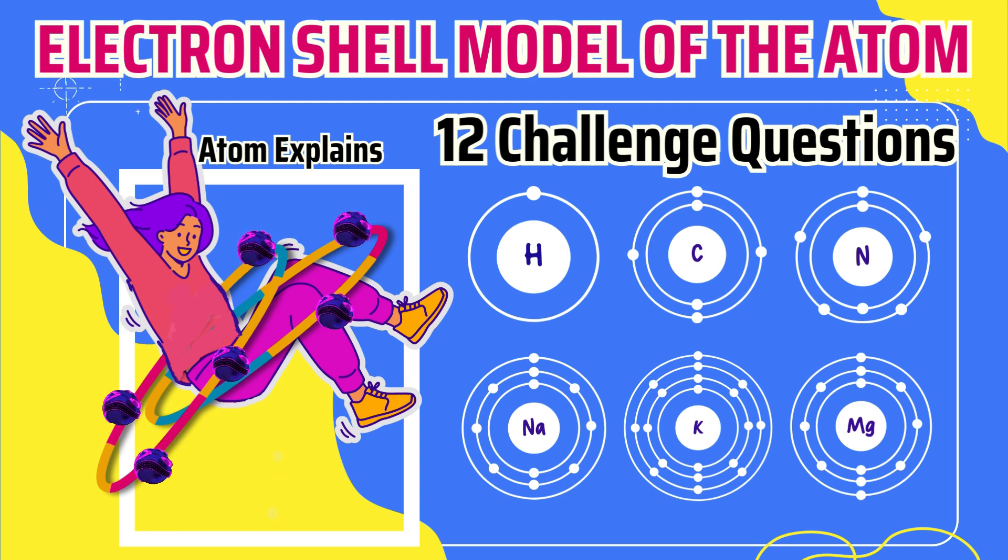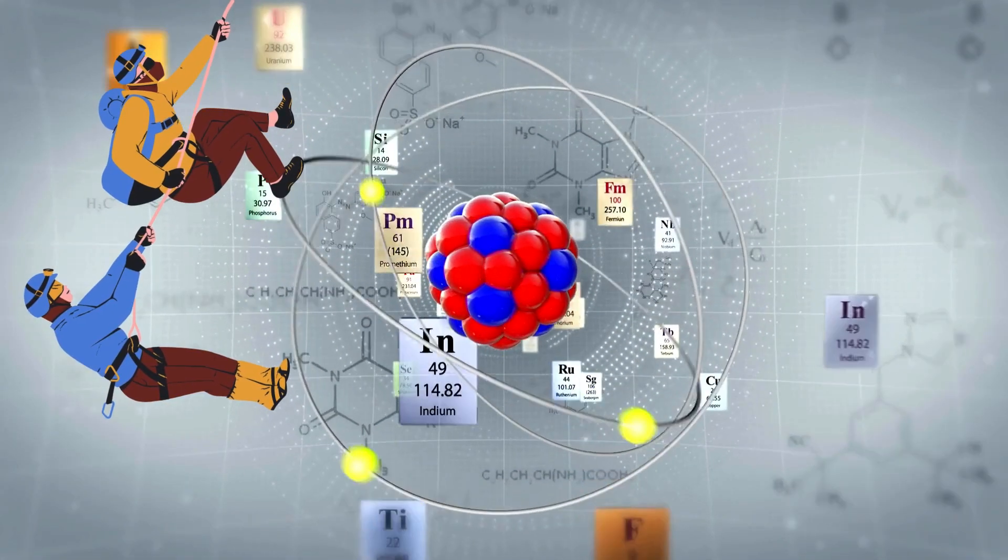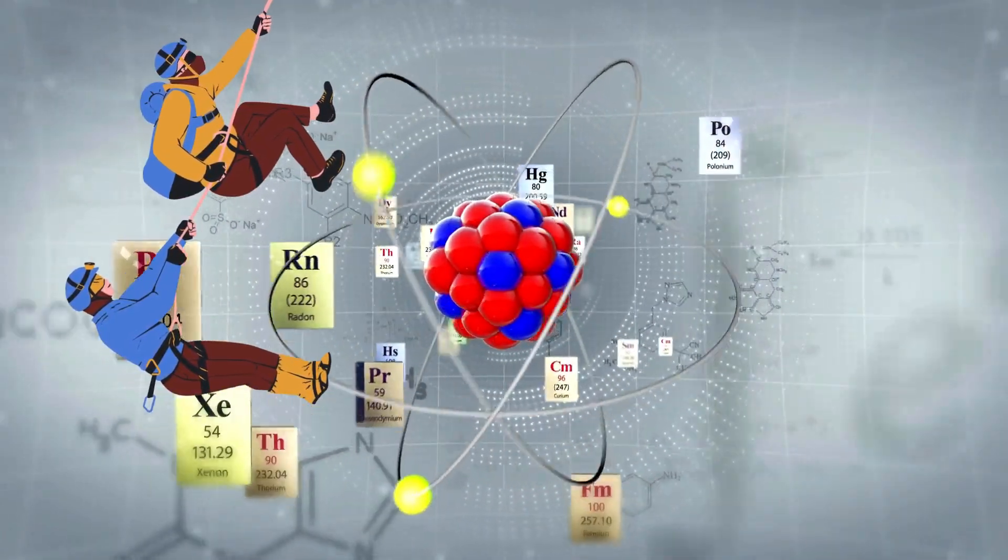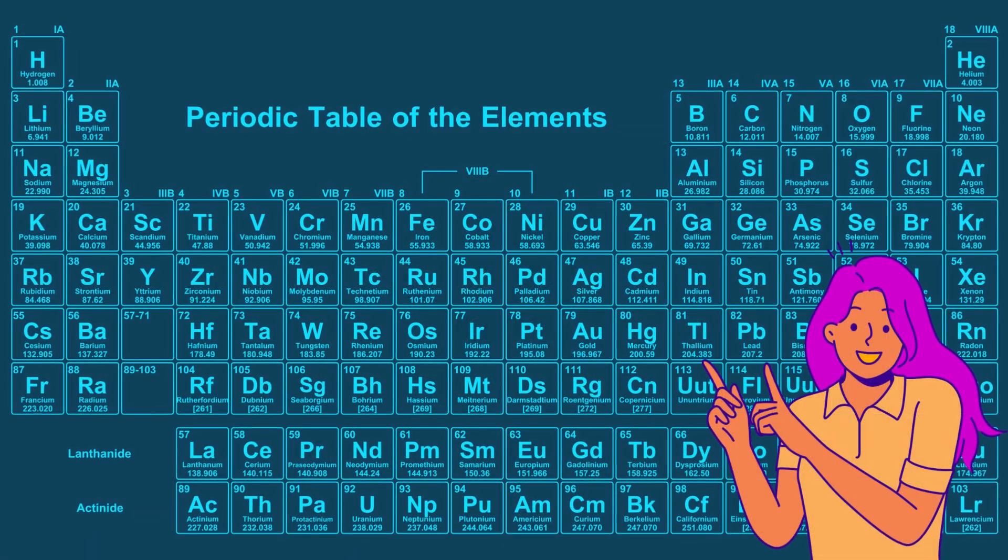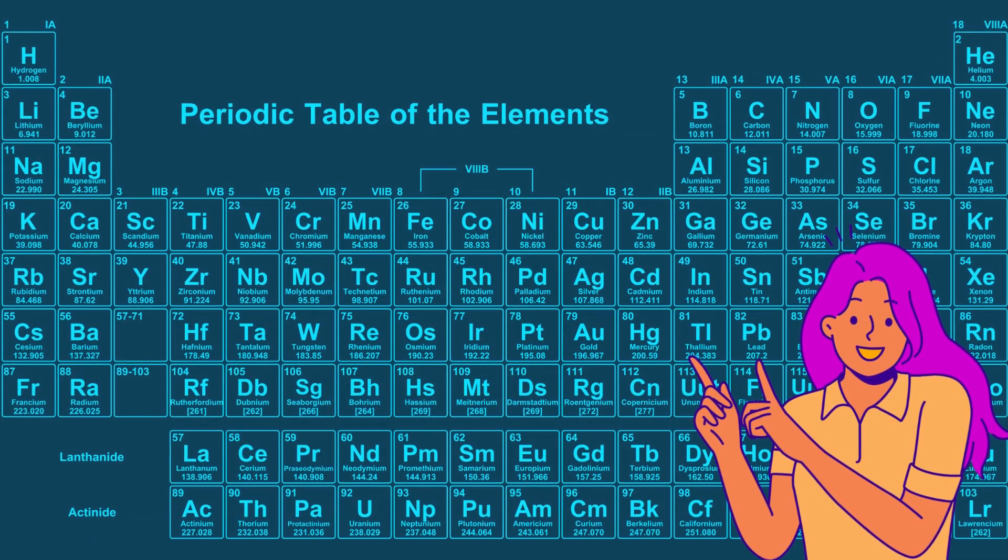Hi future scientists, I am Atom. Join me in this adventure where we will discuss the basic electron shell model of the atom and the electron configuration of atoms from hydrogen to calcium, which is atomic numbers 1 to 20.